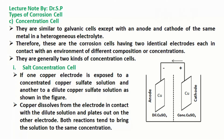Salt Concentration Cell. If one copper electrode is exposed to a concentrated copper sulfate solution and another to a dilute copper sulfate solution, as shown in the figure, copper dissolves from the electrode in contact with the dilute solution and plates out on the other electrode. Both reactions tend to bring the solution to the same concentration.